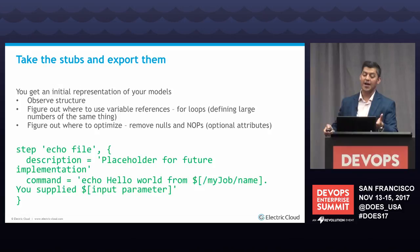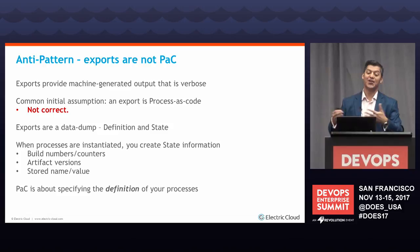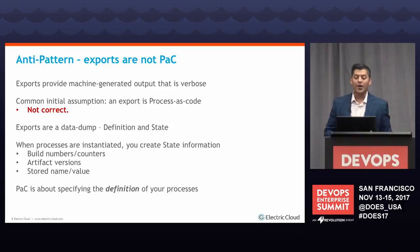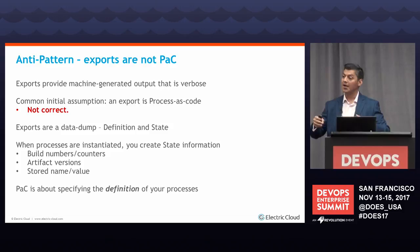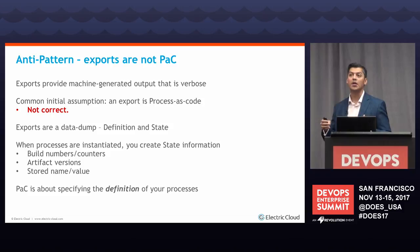So you export your stubs and you're ready to use it. But the anti-pattern I want to describe is where too many people start off and say: I have my model, I exported it, I'm doing process as code. The answer is: no, that's not right. Exports are machine-generated output. It's going to be verbose, but it's not a real model — it's just a data dump. It tends to include definition and state. State, as I define it, would be things like an embedded build number, a counter, date strings, an embedded artifact version, or some name-value pair your team is using because you got it up and running. That is not part of your process — that's state information.